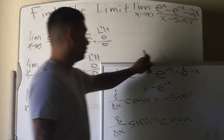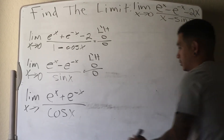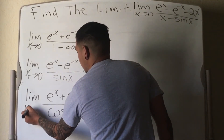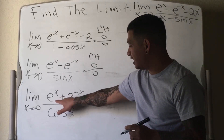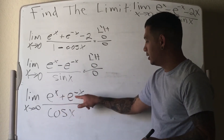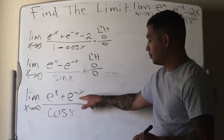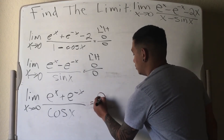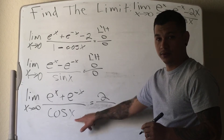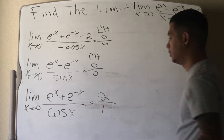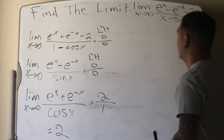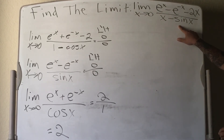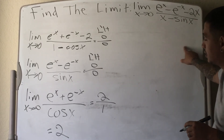Now we're getting somewhere. The limit as x approaches 0: plug in 0. Any number to the 0 power is 1, so 1 plus 1 is 2 on top. Cosine of 0 is 1 on the bottom. Therefore, the limit as x approaches 0 of e to the x minus e to the negative x minus 2x over x minus sine x is equal to 2.